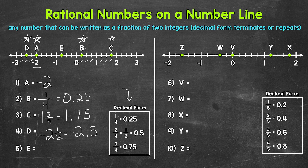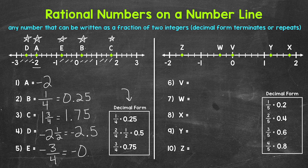We can wrap up this first number line with number five. We have point E, which is between zero and negative one. We have negative one fourth, negative two fourths (negative one half), and then negative three fourths. So point E is at negative three fourths, which written as a decimal is negative 0.75 — negative seventy-five hundredths.